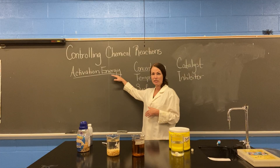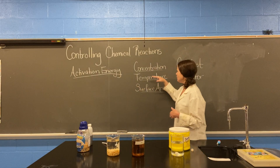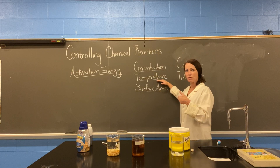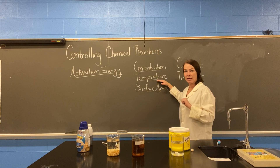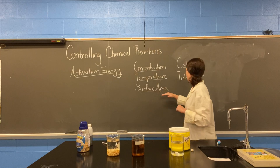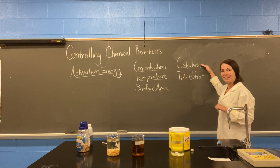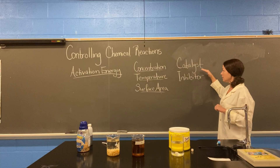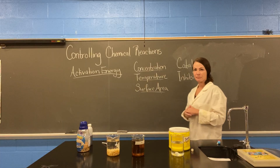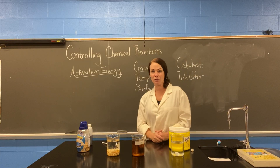So to recap: activation energy is the amount of energy it takes to get a reaction started. Concentration — the amount of one substance in another — can change a chemical reaction. Increasing or decreasing temperature can change a chemical reaction. The amount of surface area of a substance that's exposed can change a chemical reaction. A catalyst speeds up or starts a chemical reaction, and an inhibitor will slow down or prevent a chemical reaction.